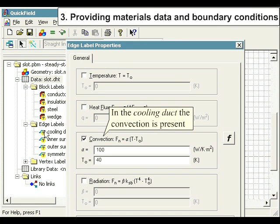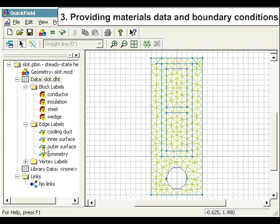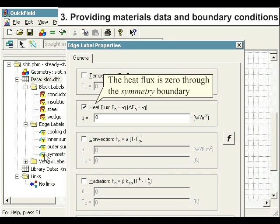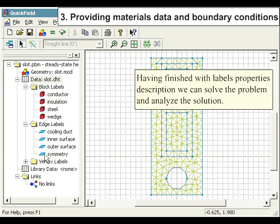In the cooling duct, convection is present. At the inner surface, convection is present. At the outer surface, convection is present. The heat flux is zero through the symmetry boundary. Having finished with the labels properties description, we can solve the problem and analyze the solution.